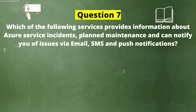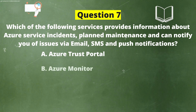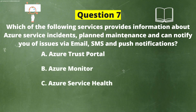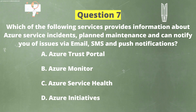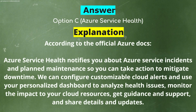Next question. Which of the following services provides information about Azure service incidents, planned maintenance, and can notify you of issues via email, SMS, and push notifications? Option A: Azure Trust Portal. Option B: Azure Monitor. Option C: Azure Service Health. Option D: Azure Initiatives. The correct answer is Option C — Azure Service Health. According to the official Azure docs, Azure Service Health notifies you about Azure service incidents and planned maintenance so you can take action to mitigate downtime. You can configure customizable cloud alerts and use a personalized dashboard to analyze health issues, monitor impact to your cloud resources, get guidance and support, and share details and updates.